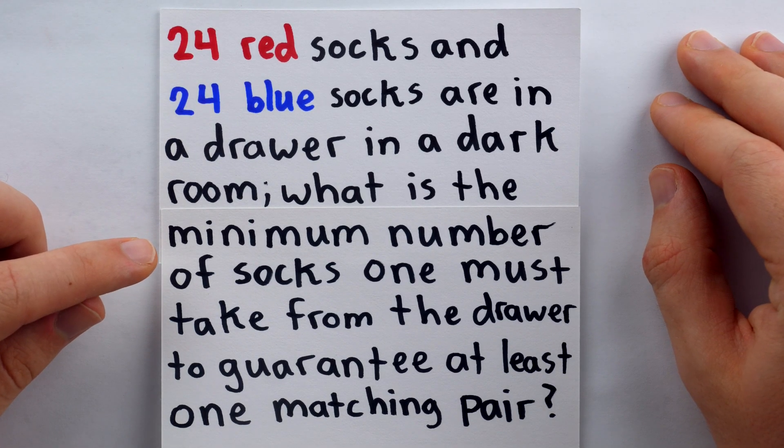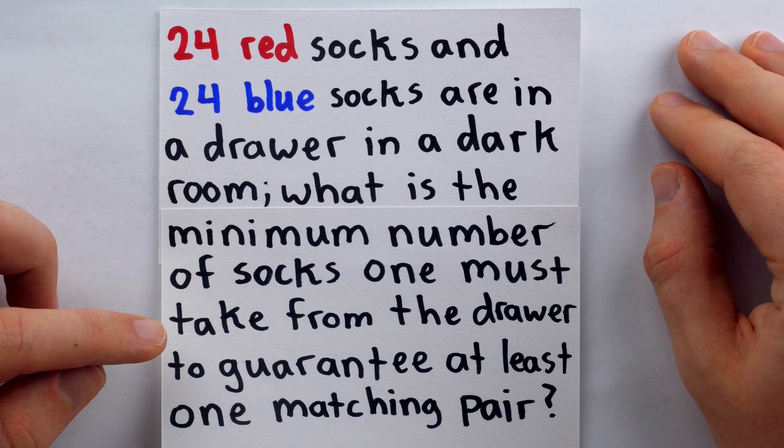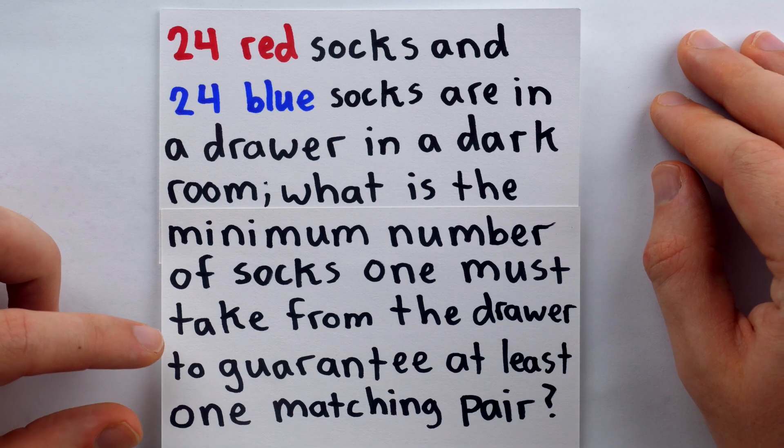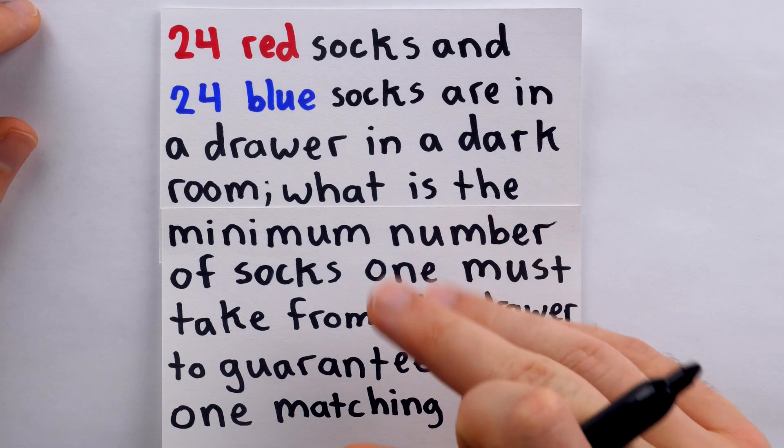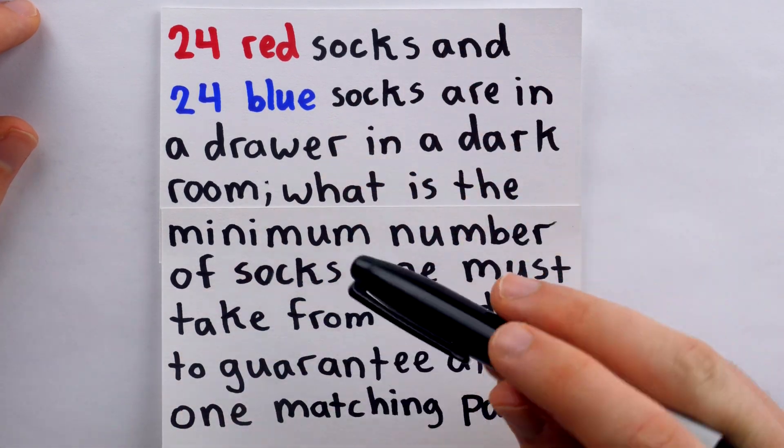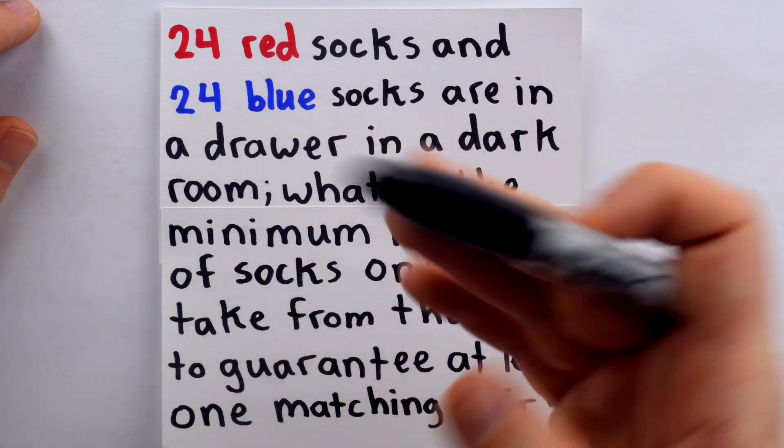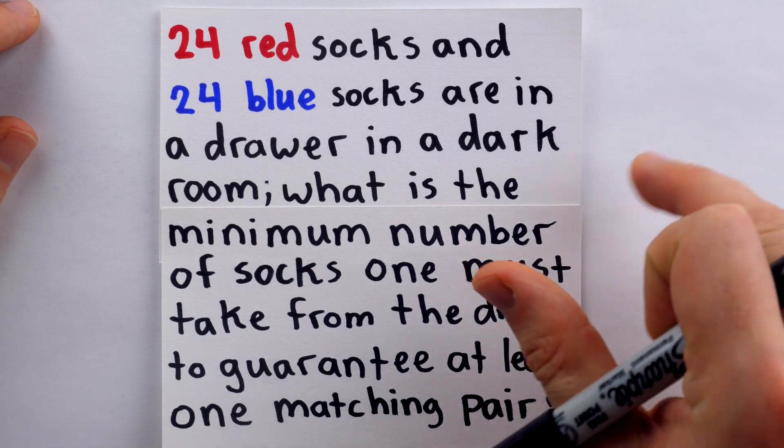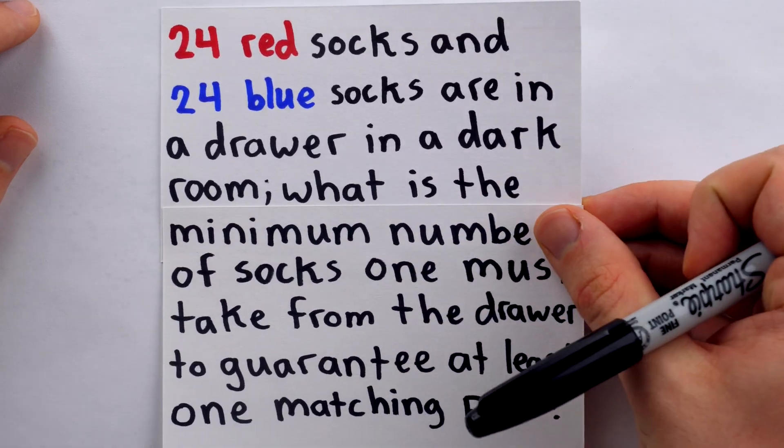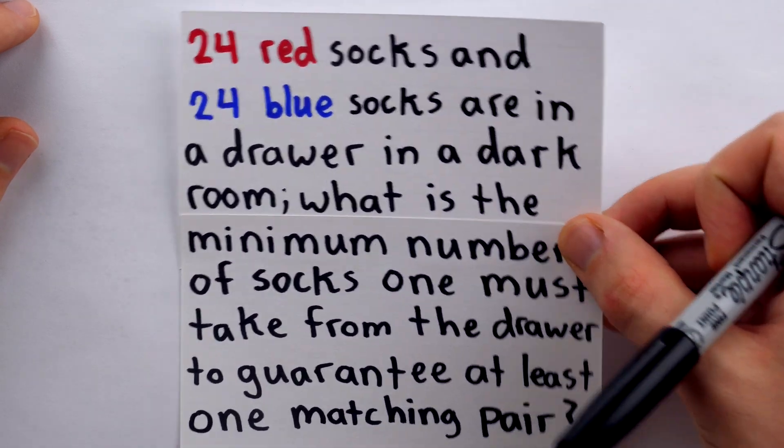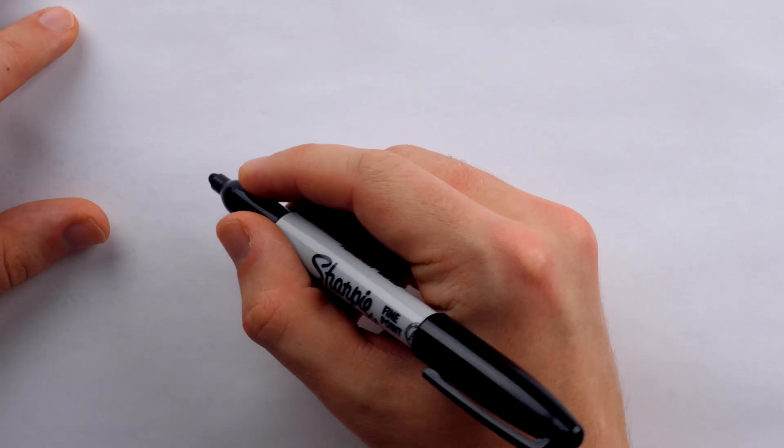What's the minimum number of socks one must take from the drawer to guarantee at least one matching pair? So we're taking socks from the drawer, we don't know what their color is, and we need to figure out the minimum number we must take to be sure, even without seeing, that we have at least one pair of socks of the same color.